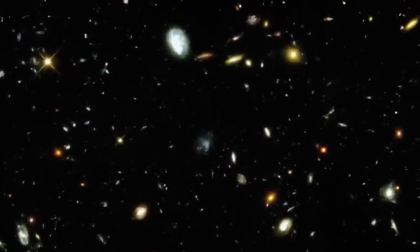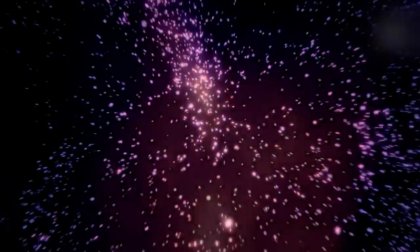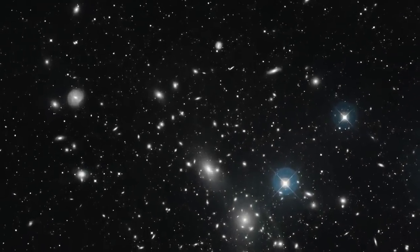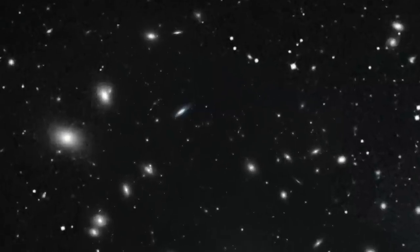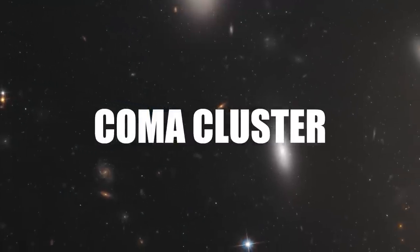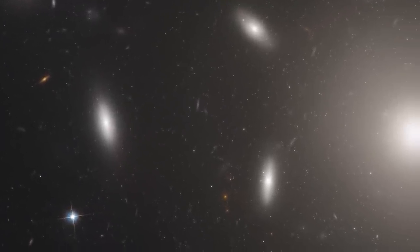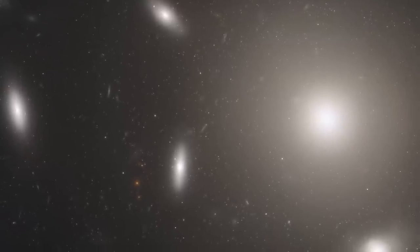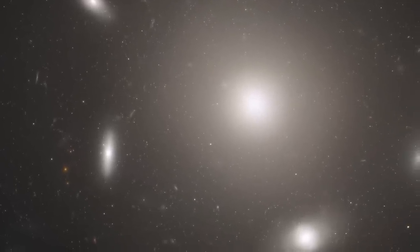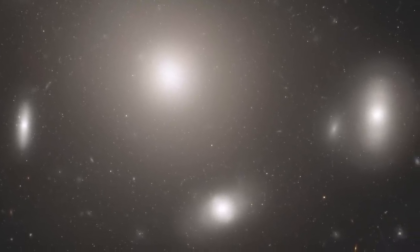Using a blend of observational data and sophisticated cosmic simulations, astronomers predict the evolutionary trajectory of this proto-cluster. Fast forward billions of years, and this young assembly is believed to metamorphose into an astronomical giant, bearing striking resemblance to the modern-day Coma Cluster. The Coma Cluster, located over 300 million light-years from Earth, is an enormous collection of over a thousand galaxies, tightly knit by gravity. It's a majestic display of cosmic evolution, where initial seeds of galactic congregations in the early universe blossom into colossal structures we witness today.